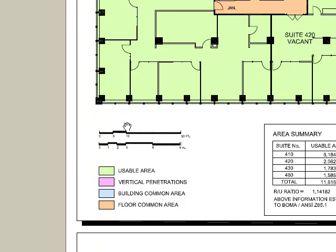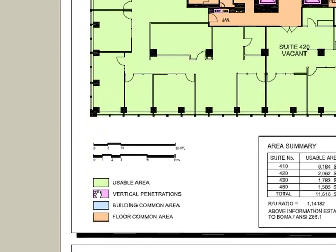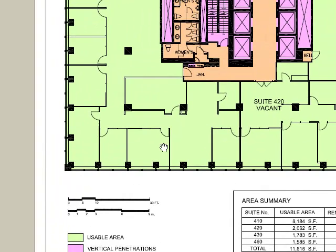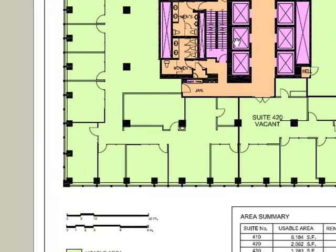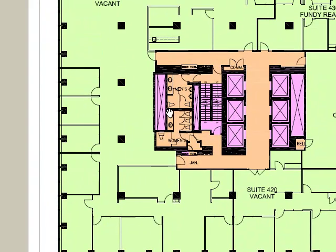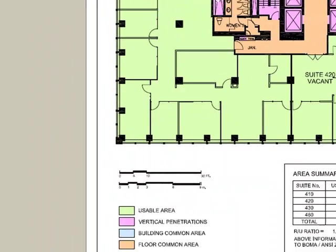Major vertical penetration, shown in pink, indicates all building elements that penetrate the entire building — staircases, elevators, and shafts. These areas are subtracted from the gross measured area of the building.